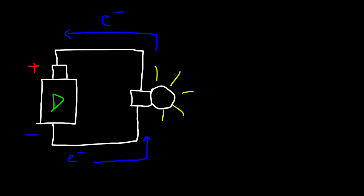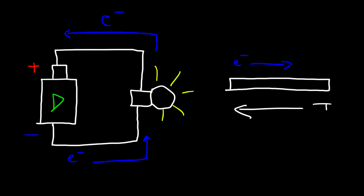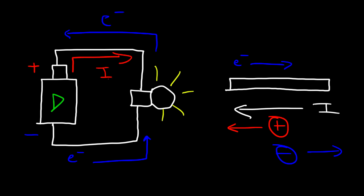Conventional current describes the flow of positive charge. If we have a conductor and the electrons — which carry a negative charge — are moving towards the right, the current is described as moving towards the left. A positive charge flows in the opposite direction compared to a negative charge. So conventional current is defined as the flow of positive charge, flowing from the positive terminal to the negative terminal. Remember: electrons flow from the negative to the positive terminal, but in reality, it's the electrons that are actually moving in the metal.